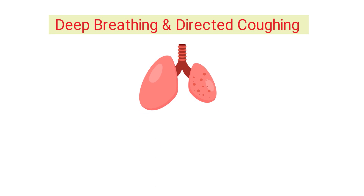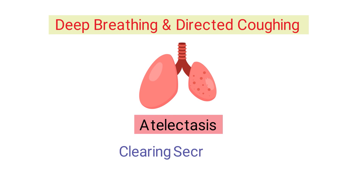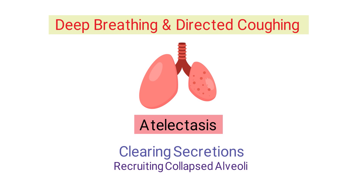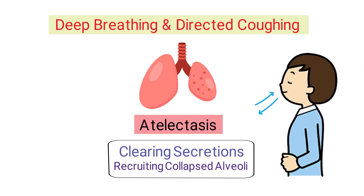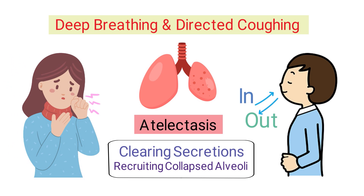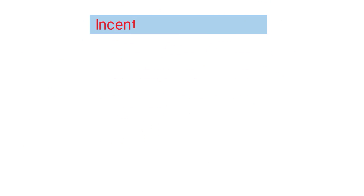Deep breathing exercises and directed coughing can help treat patients with atelectasis by clearing secretions and recruiting collapsed alveoli. Patients who are able to do deep breathing exercises on their own can be instructed to take slow deep breaths in through the nose and out through the mouth, then follow up a deep breathing cycle with a forceful cough. Patients who are unable to cough will need to use a different treatment method.